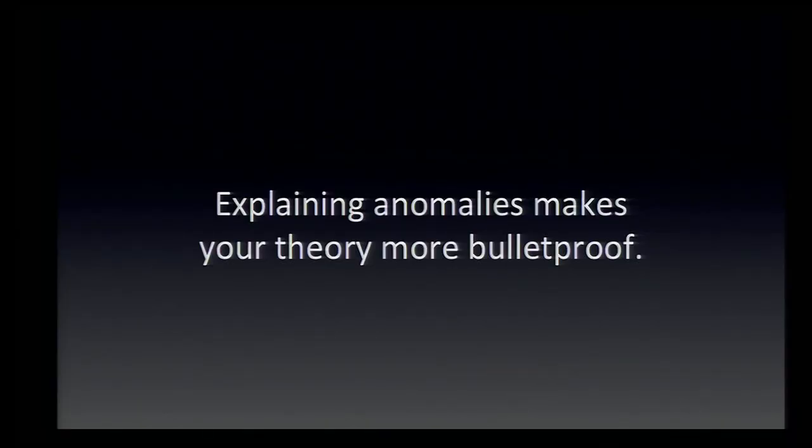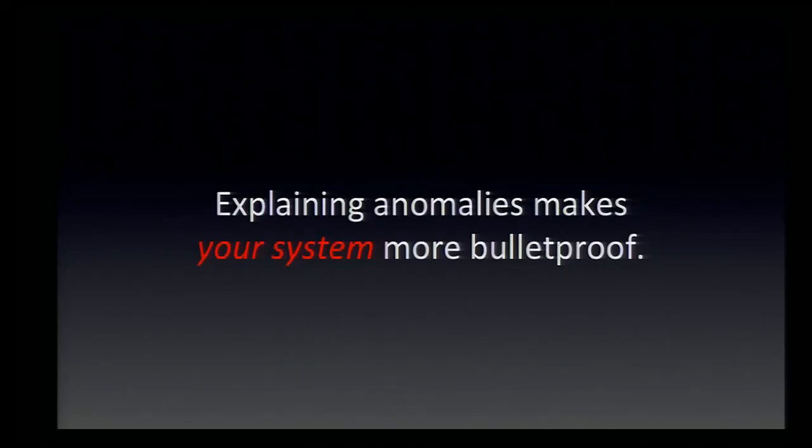To bring it all back to the story I opened with: what John Snow found was that by explaining the anomalies, he was able to make his theory bulletproof. Similarly, if you look at the anomalies — the extremes or the outliers in your data — and you take the time to explain them, you end up making your system more bulletproof, or perhaps I should say stronger and faster.